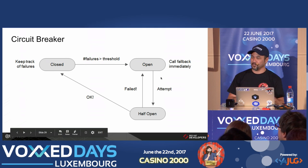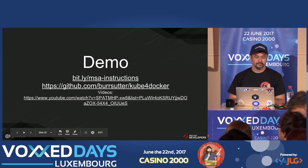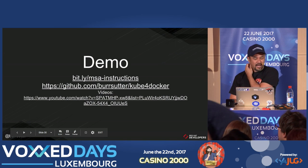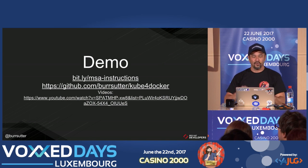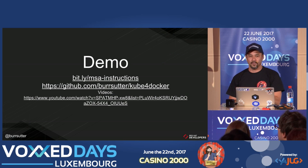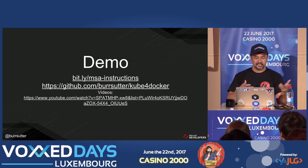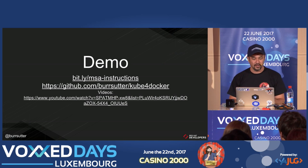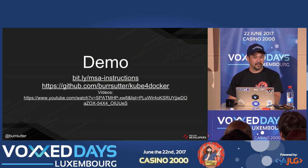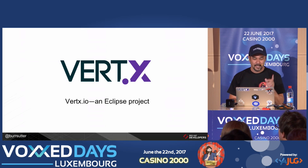In a distributed system, something will fail, something will be too slow. This is where you put in a circuit breaker like Hystrix to avoid cascading failure. I have a lot of demos around that specific set of topics: blue-green deployments, circuit breakers, canary deployment, CI/CD — all that. There's a bunch of things you can go look at there.